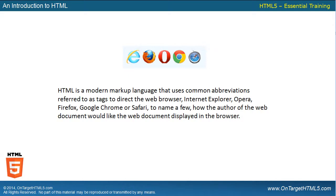HTML is a modern markup language that uses common abbreviations referred to as tags to direct the web browsers — Internet Explorer, Opera, Firefox, Google Chrome, or Safari, to name a few — how the author of the web document would like it displayed in the browser window. We're telling our web browser, regardless of what web browser it is, how that document should appear when viewed on the World Wide Web. You'll see as you learn HTML that different browsers treat some of those markup tags a little bit differently.